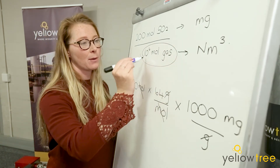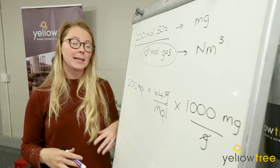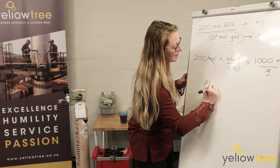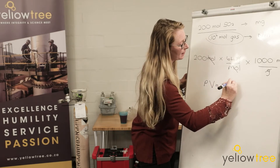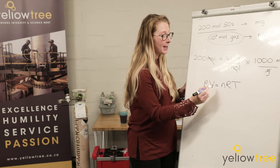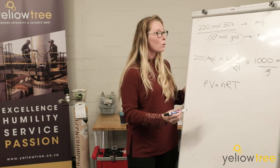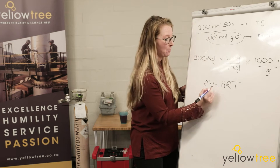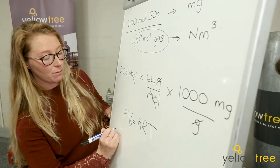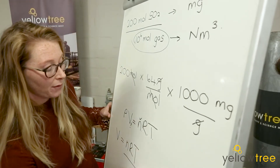Now we look at the bottom of this equation: 10⁶ moles of gas — that's 1 million moles of gas — and we want to convert that into normal cubic meters. How we do that is we use the ideal gas law: PV = NRT. Our P is for pressure, V is for volume, N is moles, R is our constant, and T is for temperature. We have the number of moles and we want to get the volume of gas, so we rearrange this equation to give us volume: V = NRT / P.